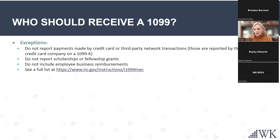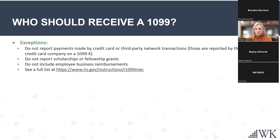A couple of exceptions: because of credit card and third-party network transactions — many online payment platforms — they are required to issue a 1099-K. So if payments are made by credit card, those will be reported through your credit card provider, and you don't have to issue a 1099 for that payment. Scholarships, fellowship grants, and employee business reimbursements do not qualify. A full list of exceptions is available via the included link.